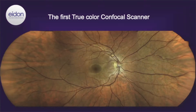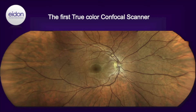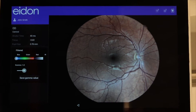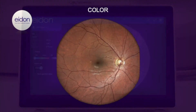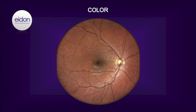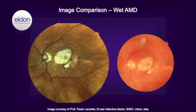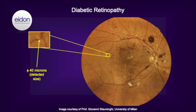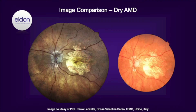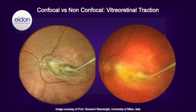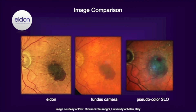Adon combines, for the first time, a confocal system with the fidelity of true color imaging by using a white LED illumination source. This unique combination provides an accurate perception of the fundus anatomy in actual appearance, which can aid in the detection, diagnosis, and follow-up of pathology. True color imaging provides details that may not be evident with fundus cameras and SLO pseudocolor images.